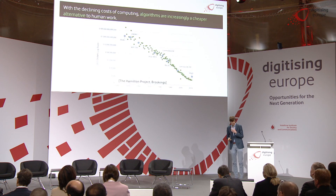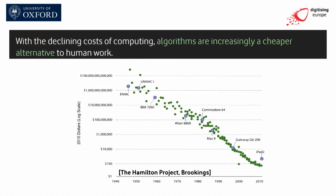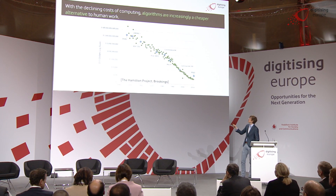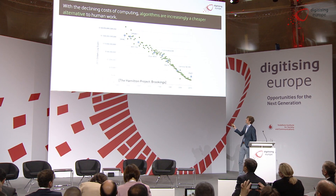The costs of any single unit of computing have continued to decline for going on almost a century now. This is the cost of a single unit of computing on the y-axis as a function of time, all the way back from 1940 to the current day. You can see there really has been this long-running decline in the cost of computing, with the obvious exception of the iPad 2, a clear outlier.